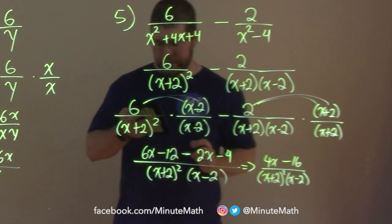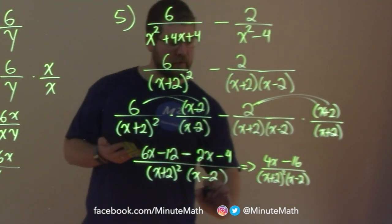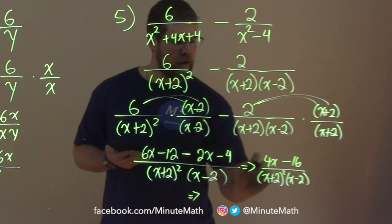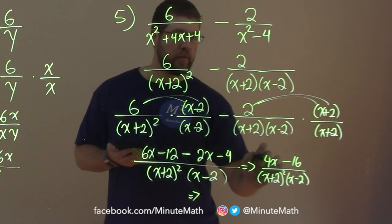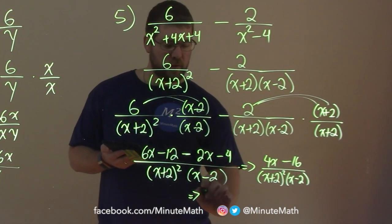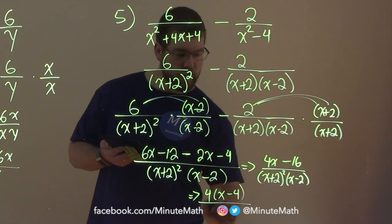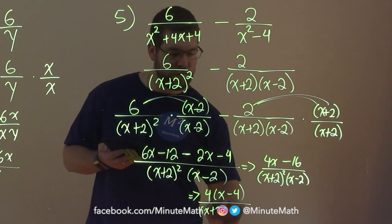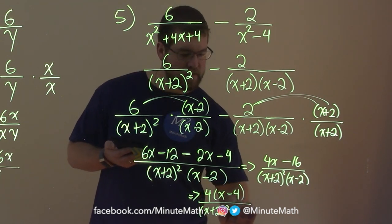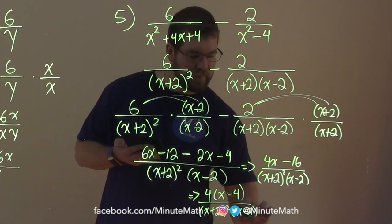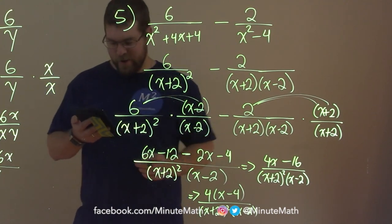But wait, we're not done. We can still simplify the numerator a little. I'll fit it right down here. We can pull out a 4, right? 4 goes into 16. So we have 4 times x minus 4 over the denominator x plus 2 squared times x minus 2. And now we are done.